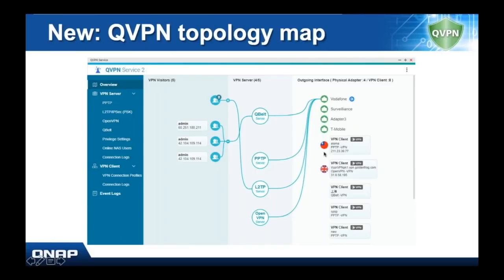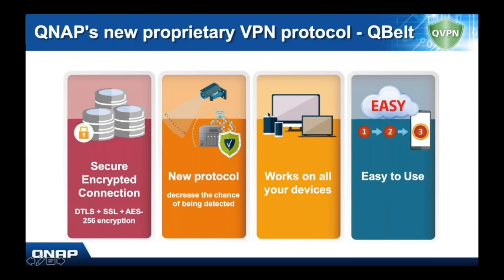Now this QVPN app is not new, but what's new is the topology has been made more clear. And also this QBelt protocol is new. What's special about QBelt is it offers DTLS plus SSL plus AES 256-bit encryption — so that's a very high degree of encryption, extremely hard to crack. It's a new protocol, so that decreases the chances of it being detected. It should work on all your devices and it's easy to use. One of the reasons it's easy to use is because we have a VPN client app to make it easier to connect.